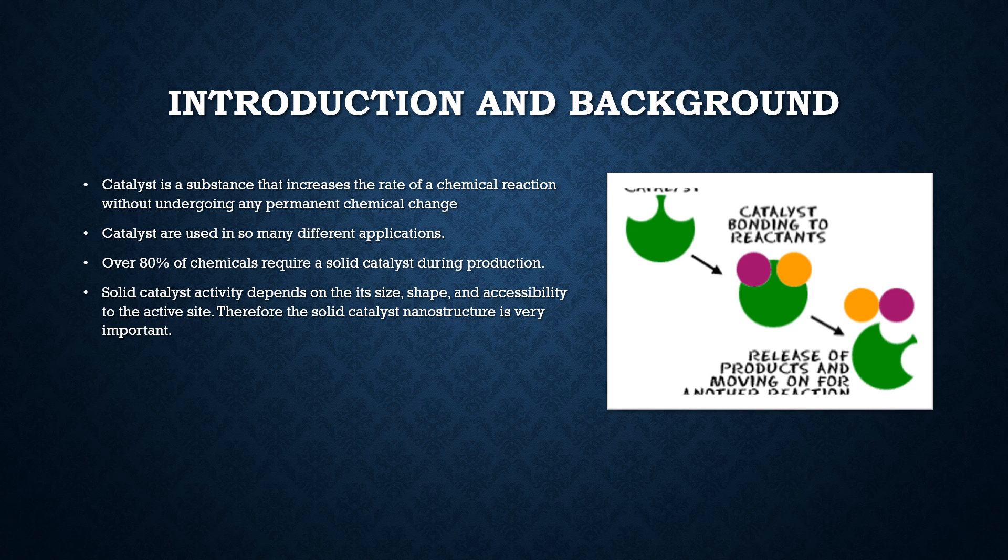You can see the empty two circles at the top of the green circle, or the catalyst. These are called active sites where the reactants come in, and then the catalyst will make them bond. This is not the only function of the catalyst - it can also reverse the reaction as well.